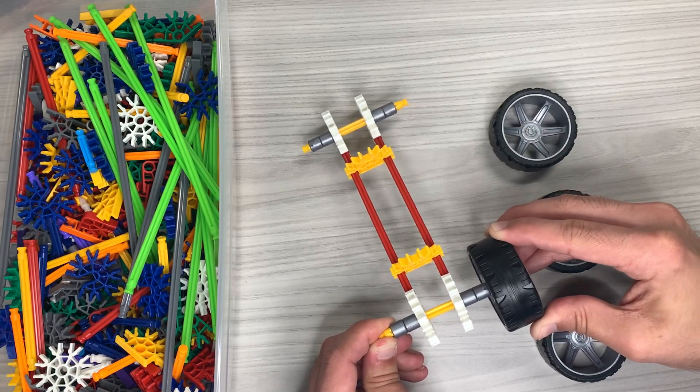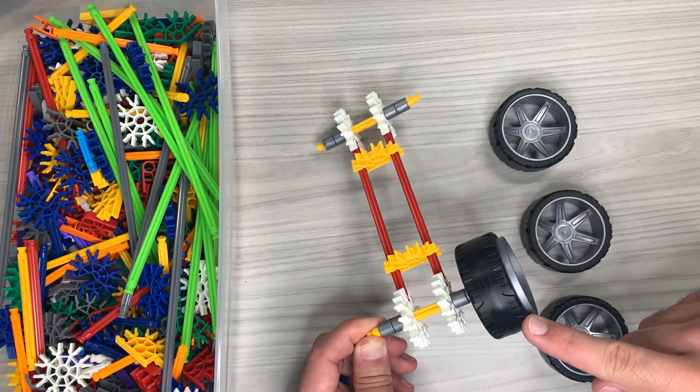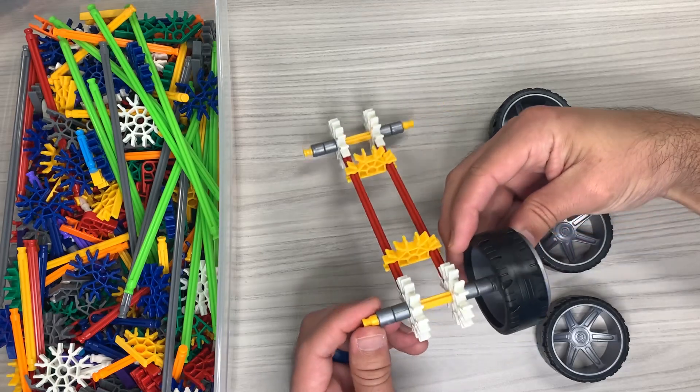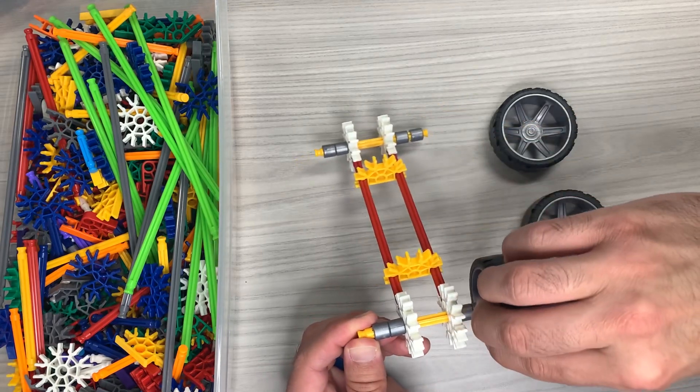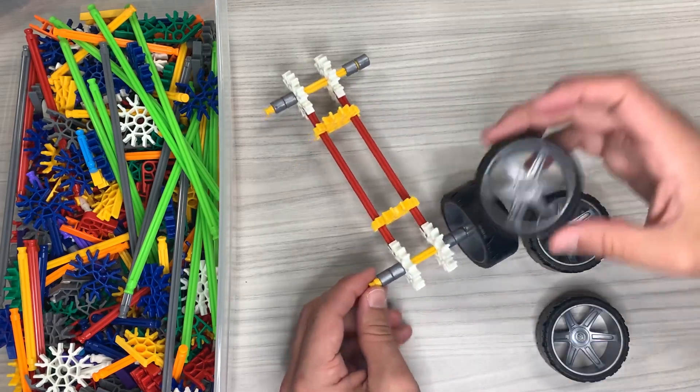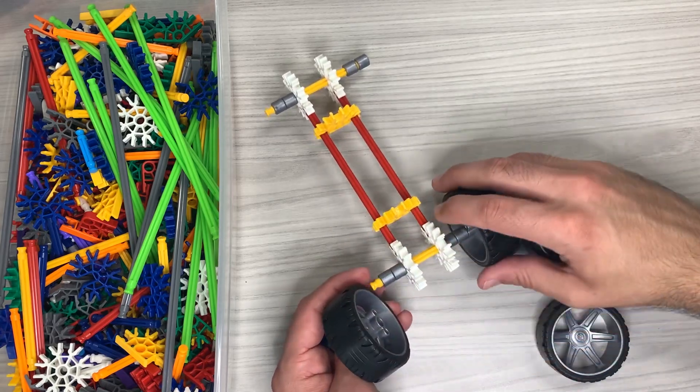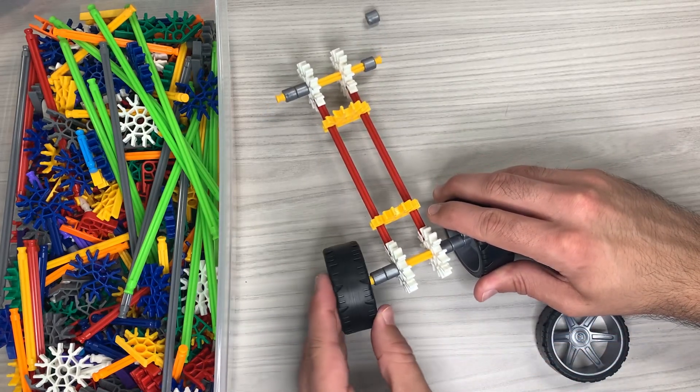Sometimes when you push it you might accidentally push the tire out a little bit too much. Just go to the back, give it a nice little even squeeze and it should go right back in the way it's supposed to go. Put another tire on this side.